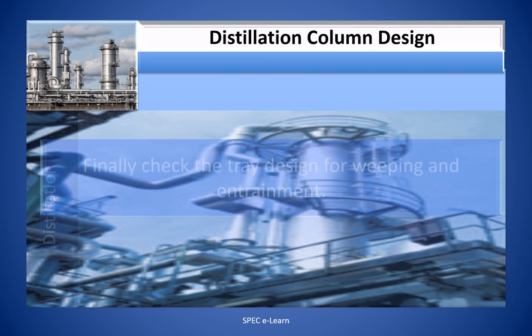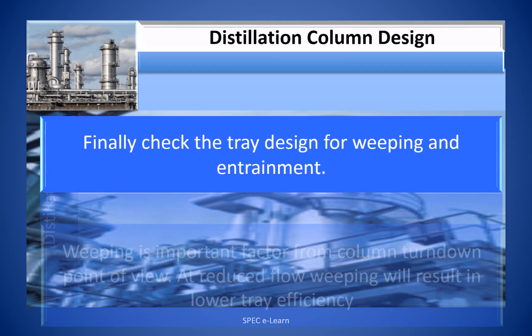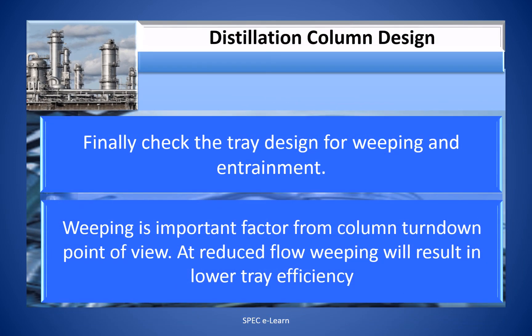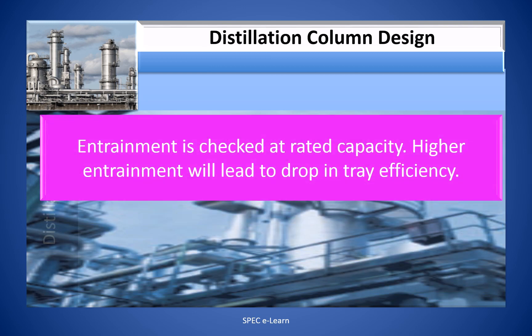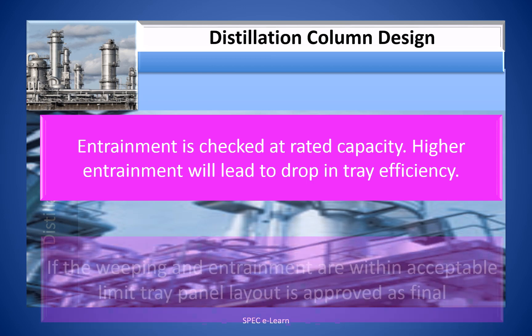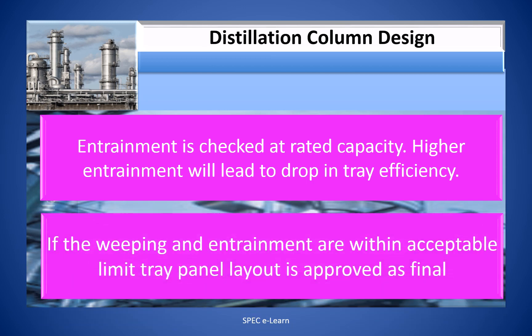Finally, check the tray design for weeping and entrainment. Weeping is an important factor from the column turndown point of view — at reduced flow, weeping will result in lower efficiency. Entrainment is checked at rated capacity; higher entrainment will lead to a drop in tray efficiency. If weeping and entrainment are within acceptable limits, the tray panel layout is approved as final.